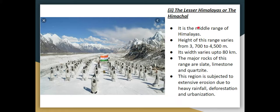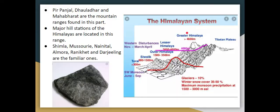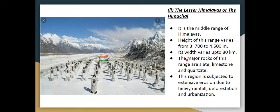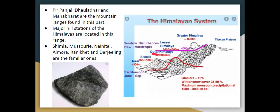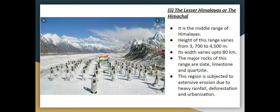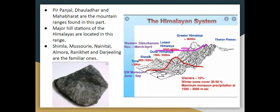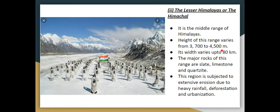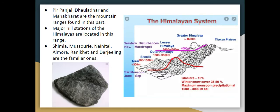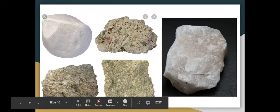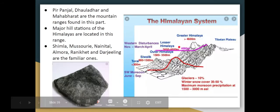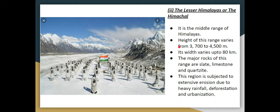Next is the Lesser Himalayas, also called Himachal — the middle range of the Himalayas. The Greater Himalayas are named Himadri. The height of the Lesser Himalayas is 3700 to 4500 meters, and the width is 80 kilometers. Major rocks found here are slates, limestone, and quartzite — these are metamorphic rocks.